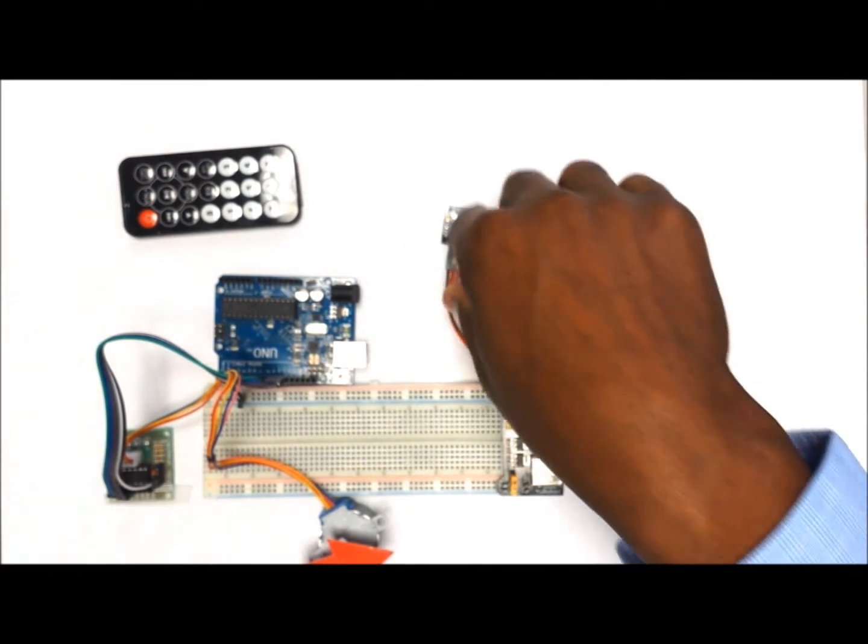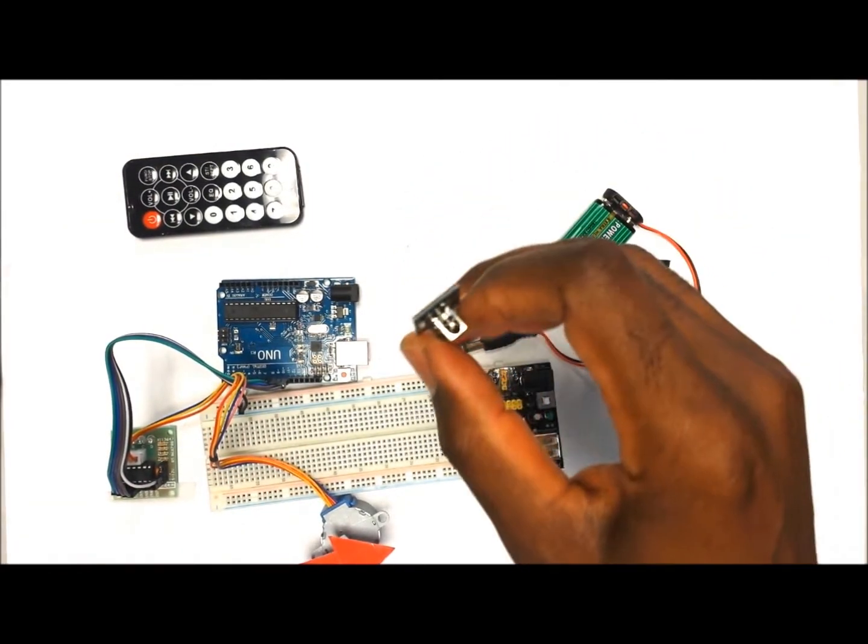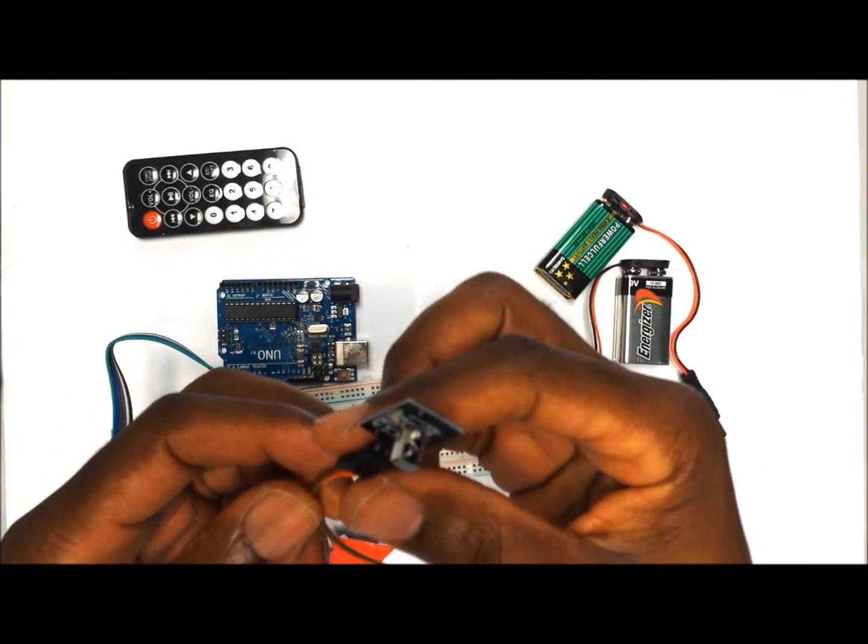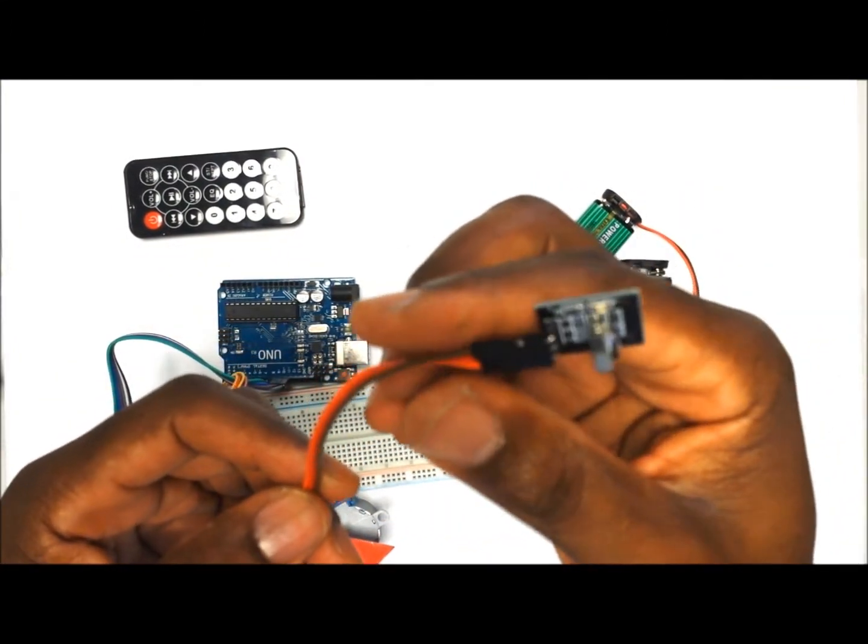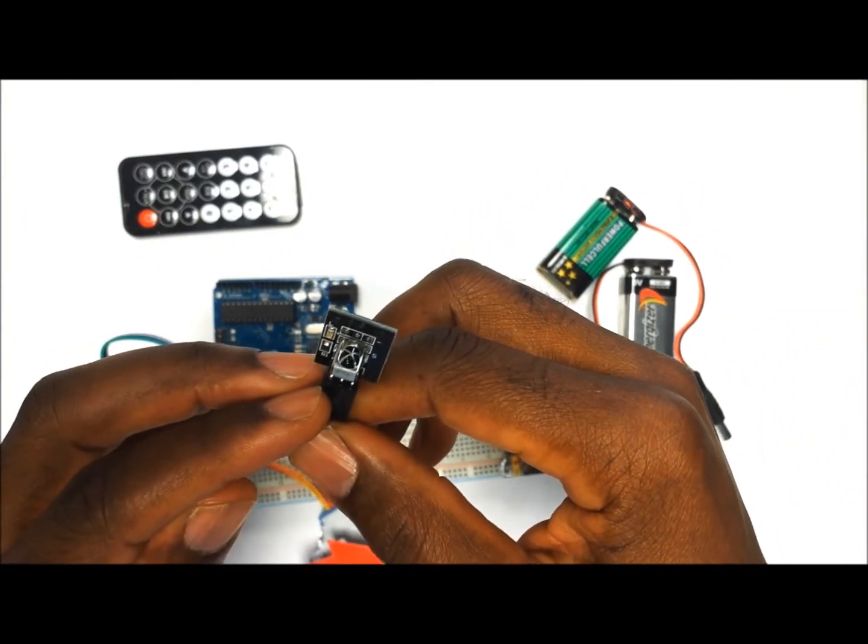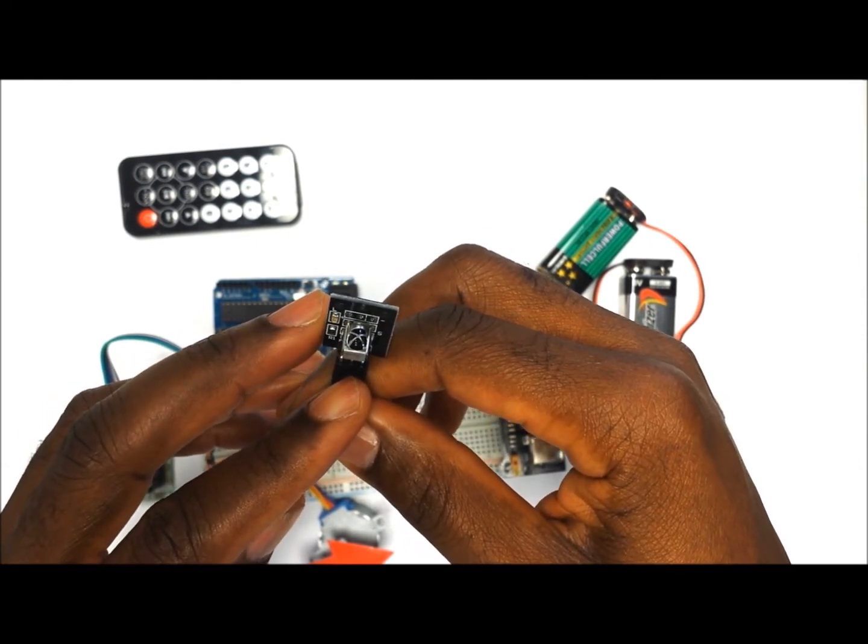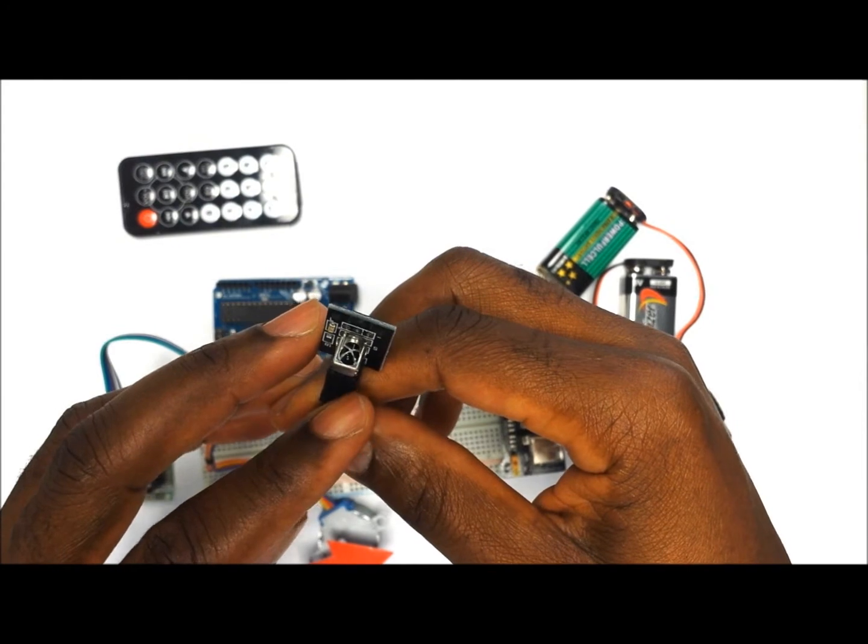So the next thing that we want to do is to connect the IR receiver that we are going to use to communicate with the remote. The IR receiver comes with three pins: one pin is going to be for ground, the middle pin is going to be for the voltage or power, and then the last one is going to be for the signal.